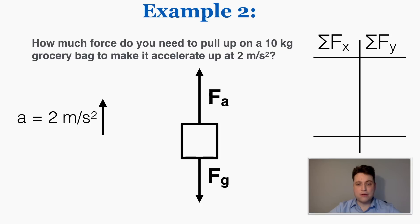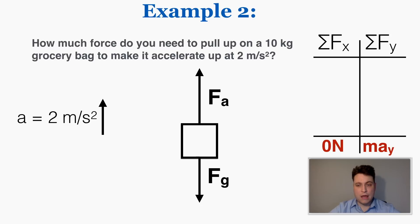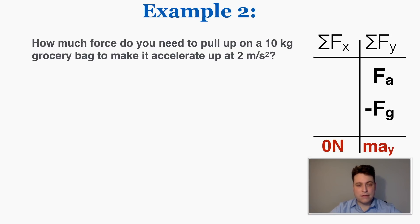We still have a force of gravity down on this bag and an applied force pulling it up. When I put this into my table, there's no acceleration in the x direction so the net force there is zero, but it is accelerating in the y direction so that equals m times ay. Calling up positive, the applied force is positive and gravity is negative, giving the equation fa minus fg equals m times ay.